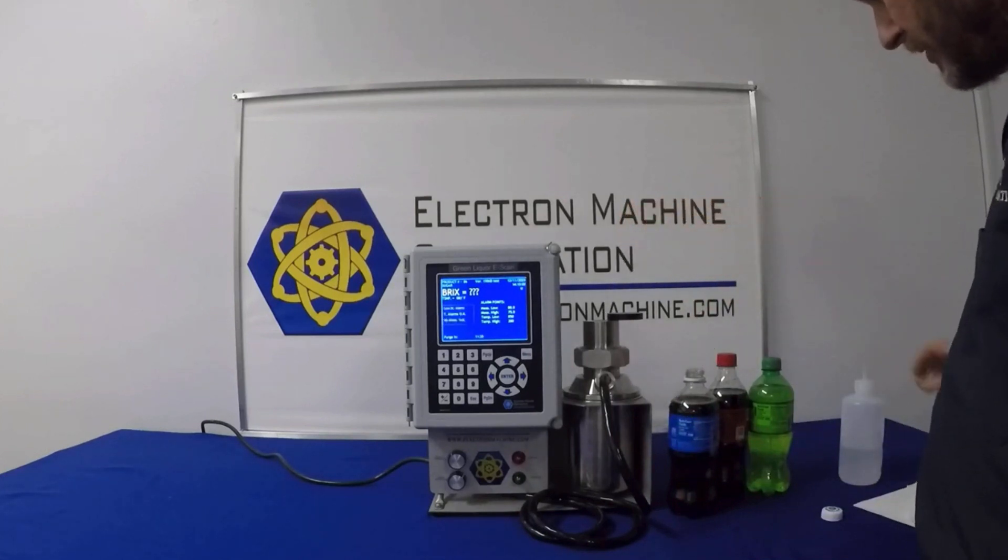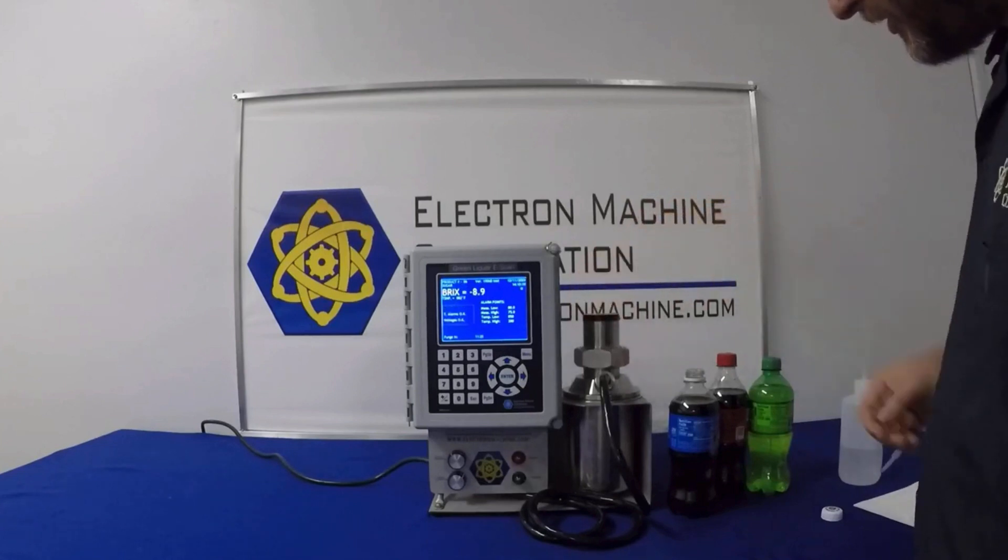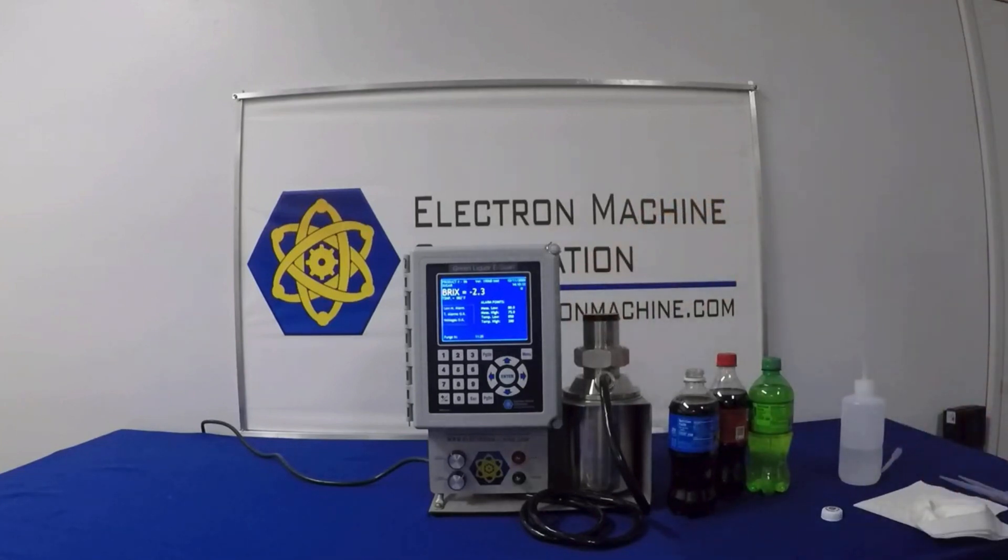Our first soda is from a popular company that uses the blue bottling. We place the sample on. We need to allow the time for the light source to adjust for this. And it looks like we're looking at around a ten brix reading for the blue branded soda brand.